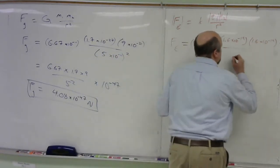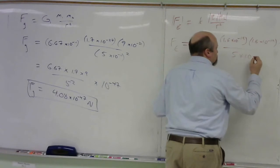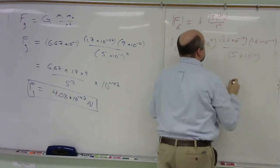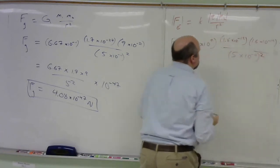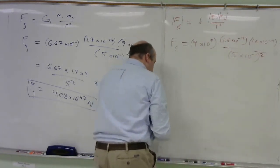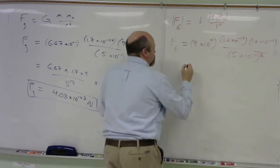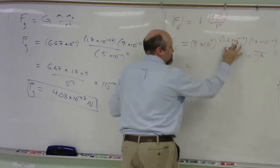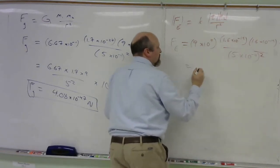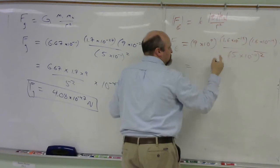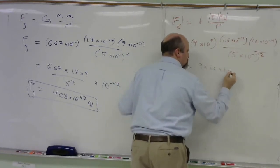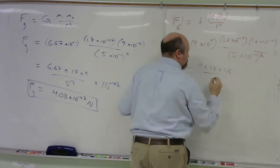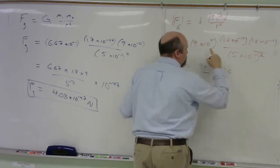The denominator, again, is that 5 times 10 to the negative 11 meters. And it's going to be squared. So I'm going to square that. Okay. That's my setup. Again, you know that I like to do my coefficients out in front, my powers of 10 to the side. So this would be 9 times 1.6 times 1.6 divided by 5 squared.